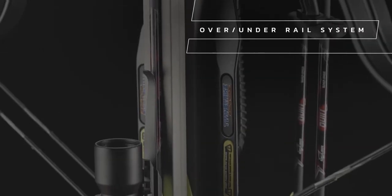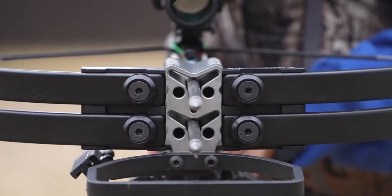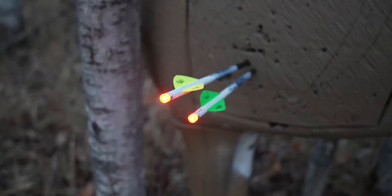The compact over-under rail system allows you to shoot both arrows through the riser for increased consistency and accuracy.